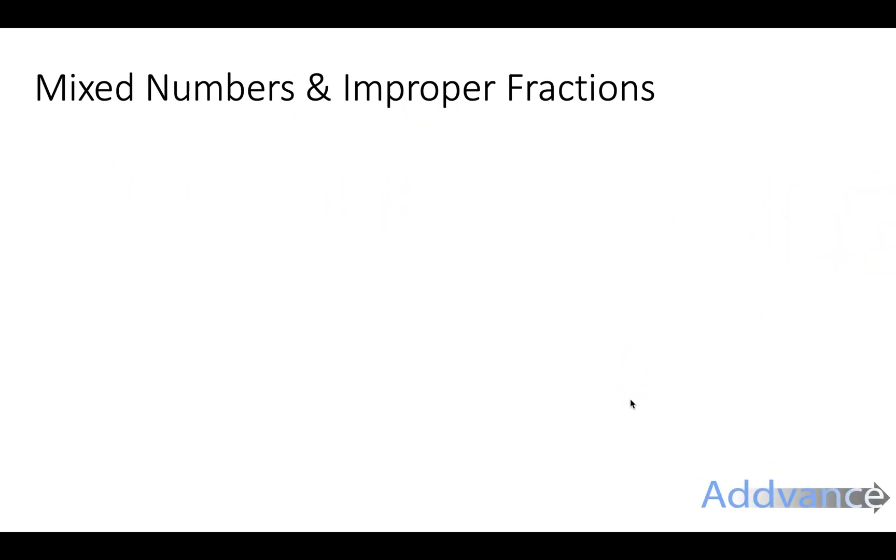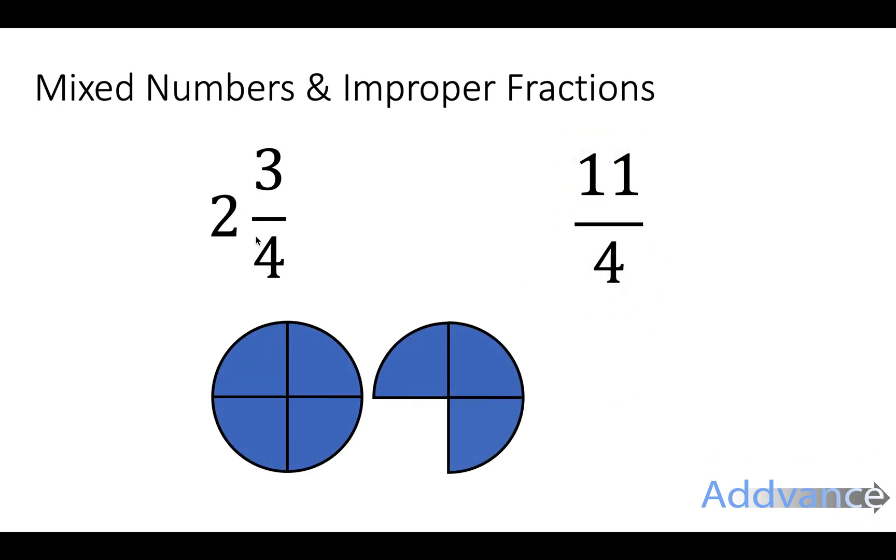I've got an example here for you where I've got 2 and 3 quarters and 11 quarters. The 2 and 3 quarters is a mixed number, the 11 quarters is an improper fraction. Improper fraction just means it's heavier on the top, it's a bigger number on the top.